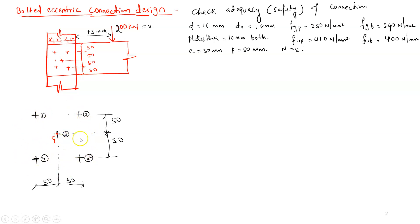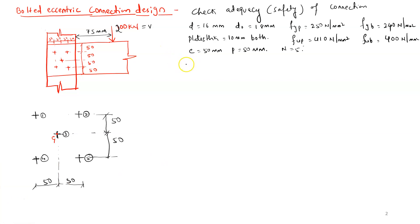Now, how do we proceed? If you have gone through the earlier video, this will make sense — otherwise, refer to that first. The load is not acting along the CG of the group of bolts; it is acting with an eccentricity. Eccentricity (E) is the perpendicular distance between the CG of the group of bolts and the line of action of the load.